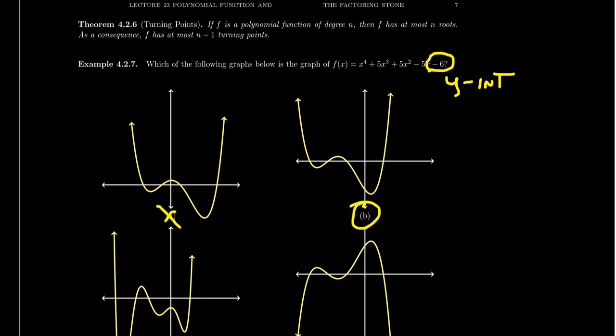It had the correct end behavior pointing up on the right. It pointed up on the left. It had the correct number of turning points. It had at most three. Now, just to be clear, not every x to the fourth graph will have three turning points. It could have only maybe one turning point, but you can't have more than three turning points if your degree is four. And then finally, it had the correct y-intercept.